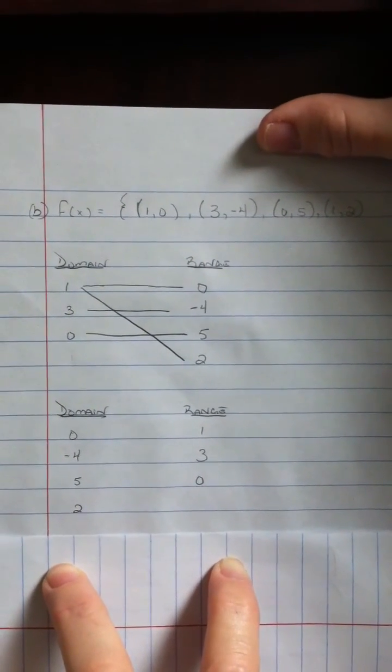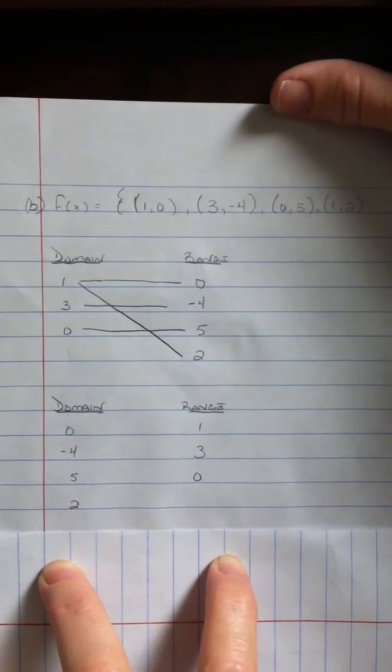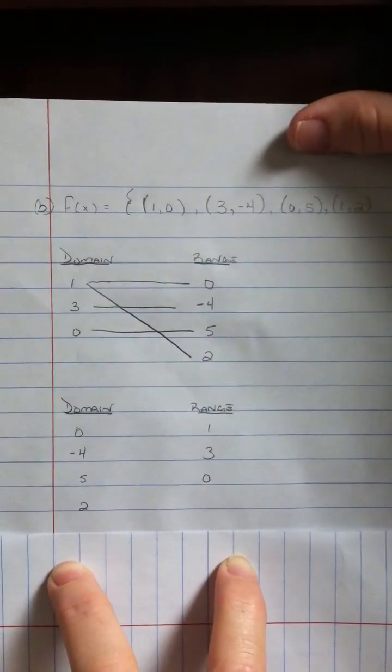And again, if you flip the range and domain, you'll get your inverse. It's still not a one-to-one function. Thank you.